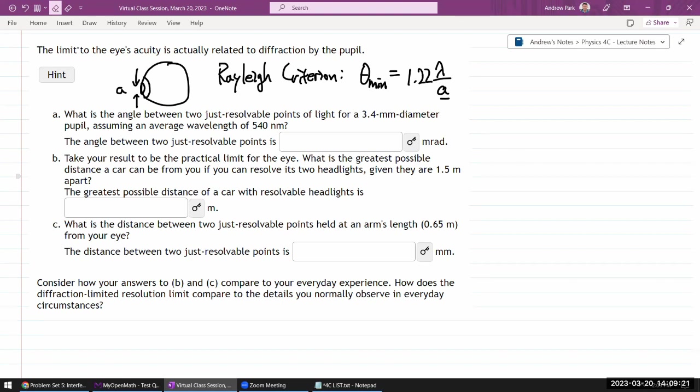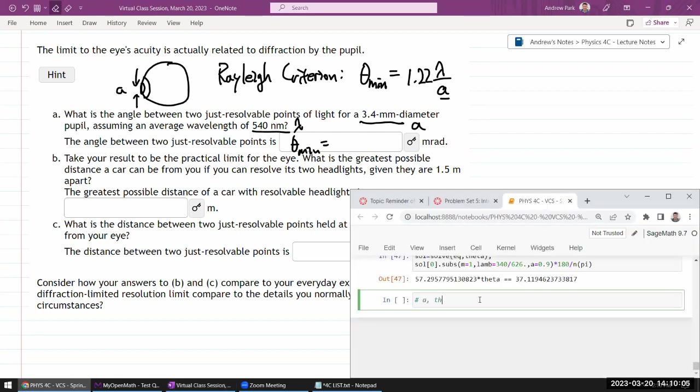So the first question where it asks what is the angle between two just resolvable points of light. They are giving us the aperture size for the pupil of the eye, assuming an average wavelength of this wavelength. So the theta_min just comes directly from the Rayleigh criterion. At least that's the number we are looking for. This is the theta_min. It's going to be 1.22 times the wavelength.